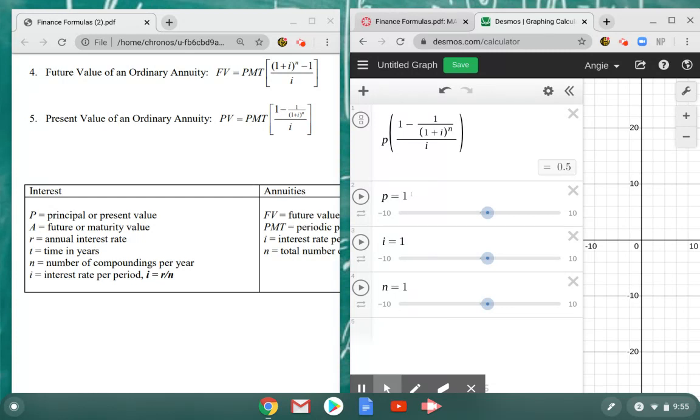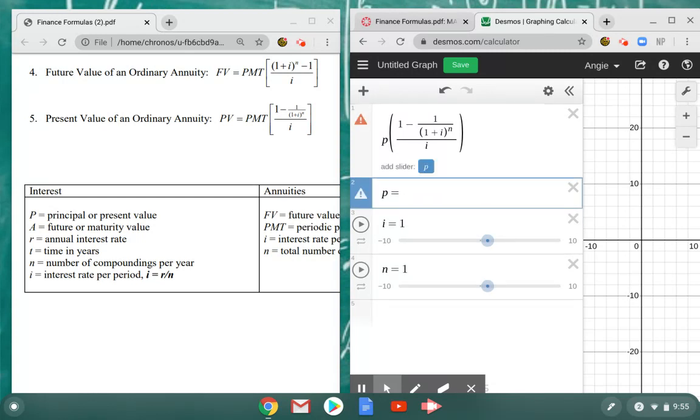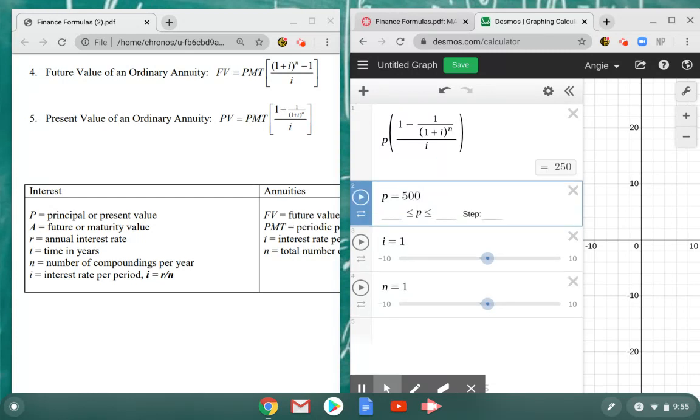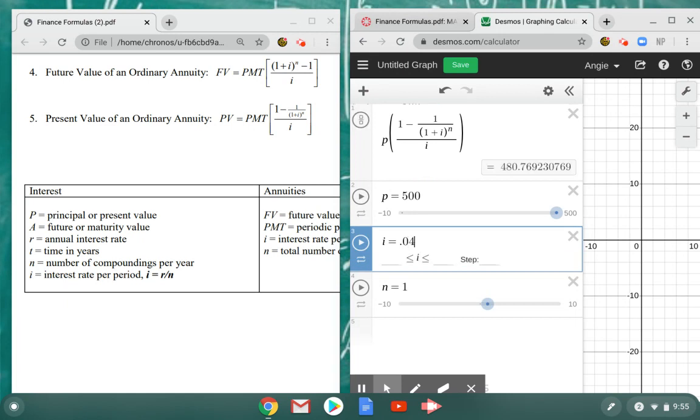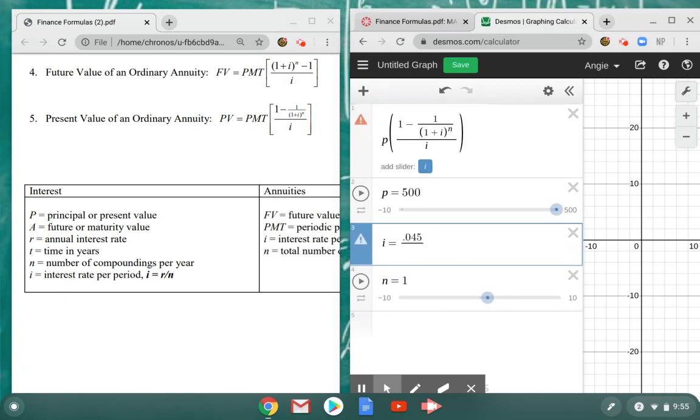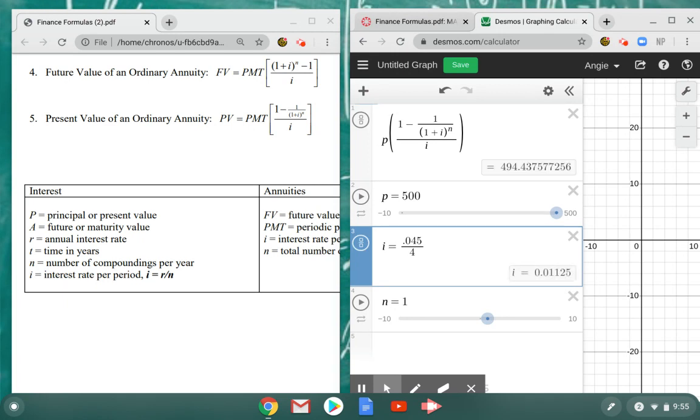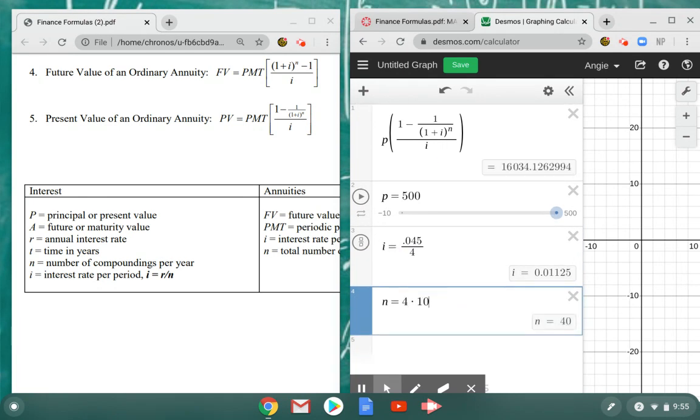Now I can do some present value calculations. Let's say I have $500 payments. My periodic interest rate, let's do 4.5%, so 0.045. This time, instead of monthly payments, we're doing those payments quarterly, so I'll do it divided by 4.